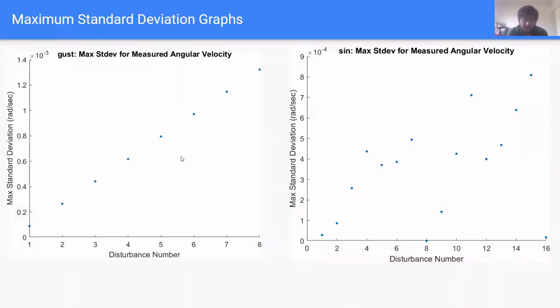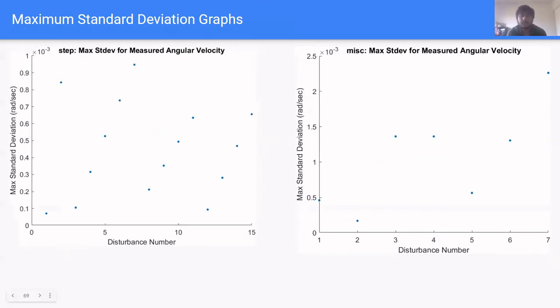Here on this slide, we show plots of maximum standard deviation versus disturbance for gust and sine. As you can see, the standard deviation is very small on the scale of 10 to the negative third and 10 to the negative fourth and does not compare to the actual measured angular velocity. Here is the same. We show the maximum standard deviation versus disturbance number for step and miscellaneous disturbances. Once again, the standard deviation is very small and does not compare to the actual measured angular velocity.